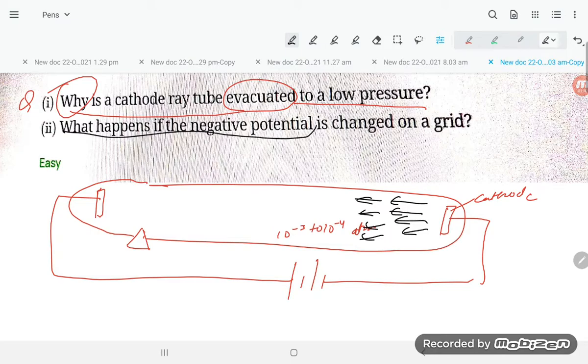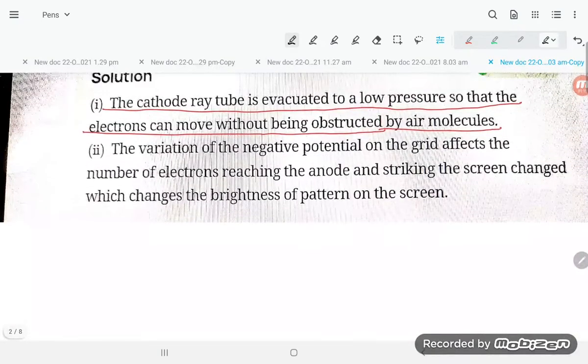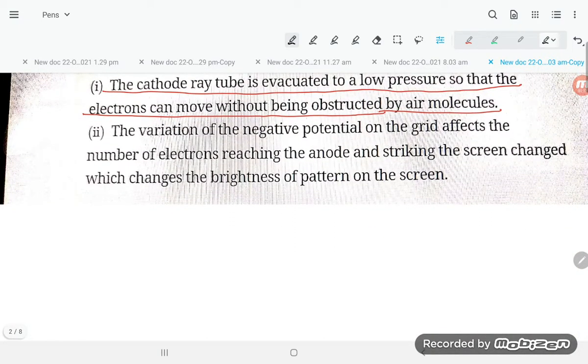What happens if the negative potential is changed on the grid? If you are changing the negative potential, then what is happening? The variation of negative potential of the grid affects...